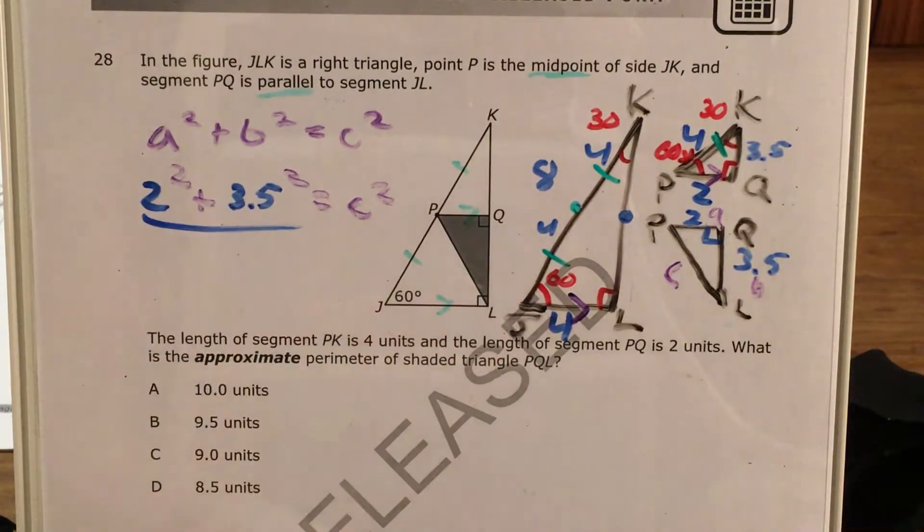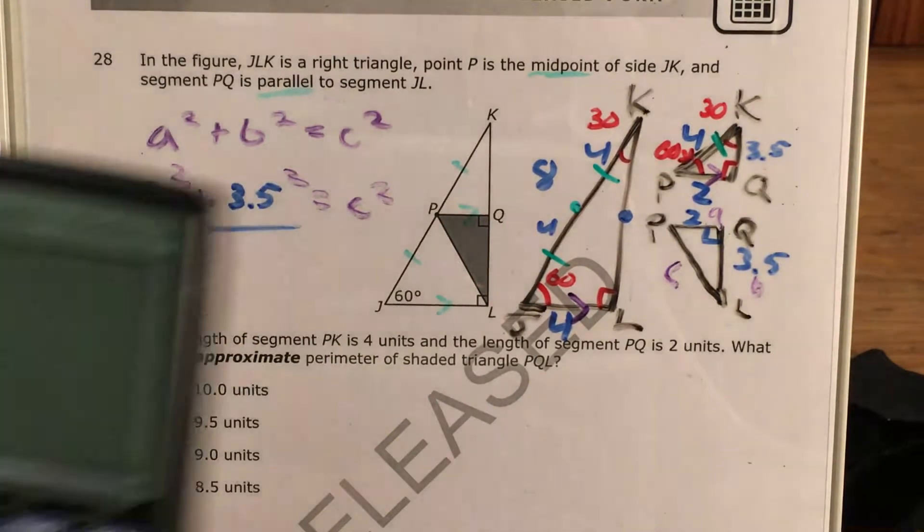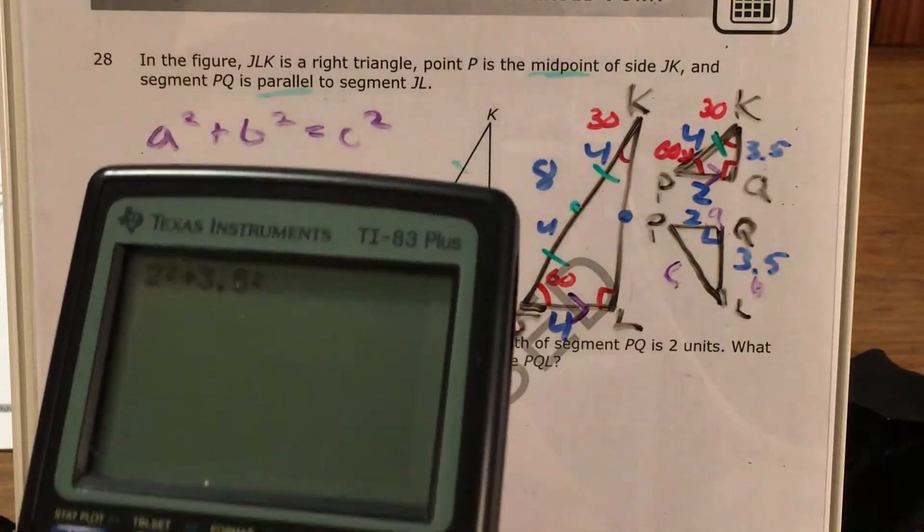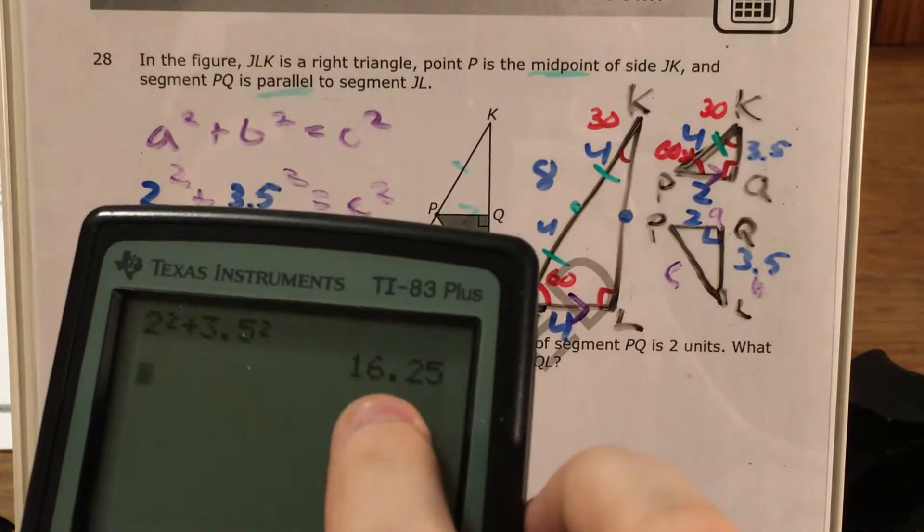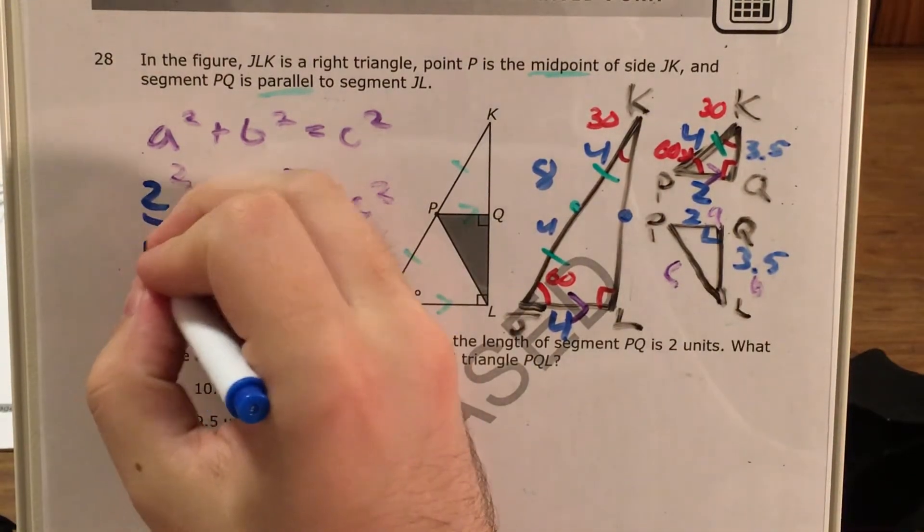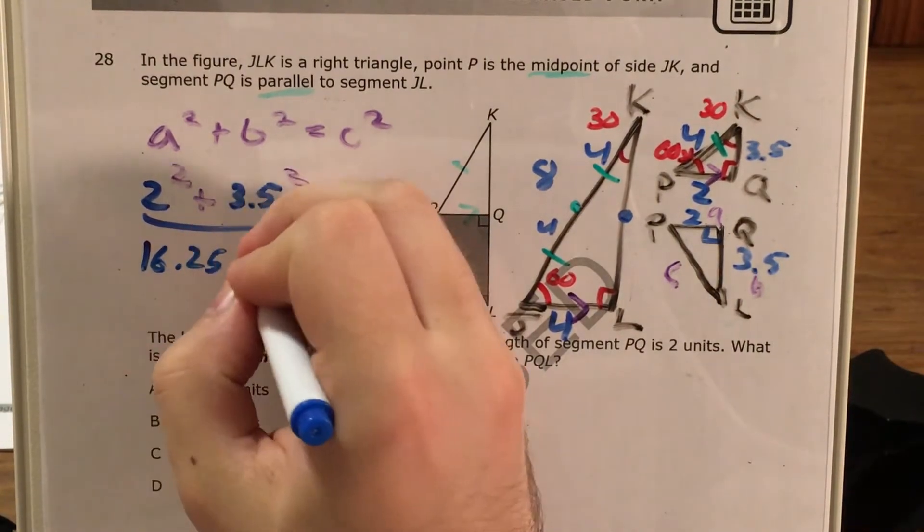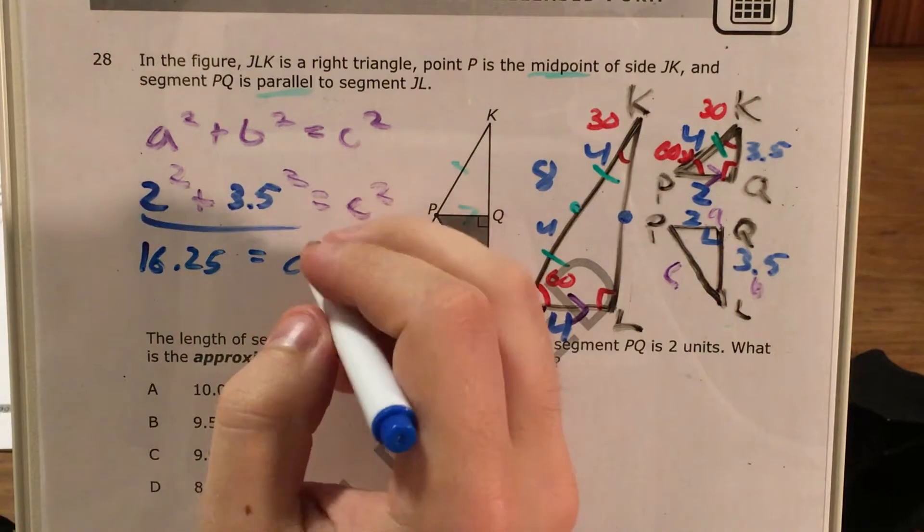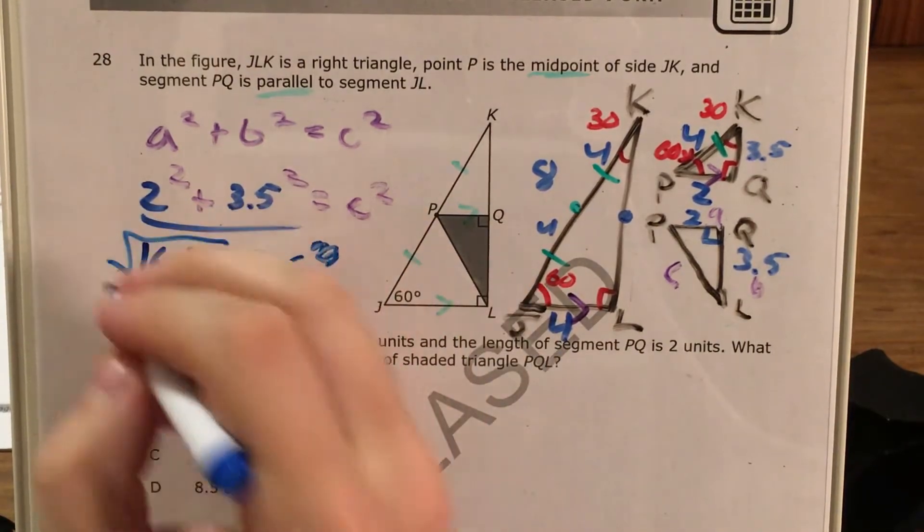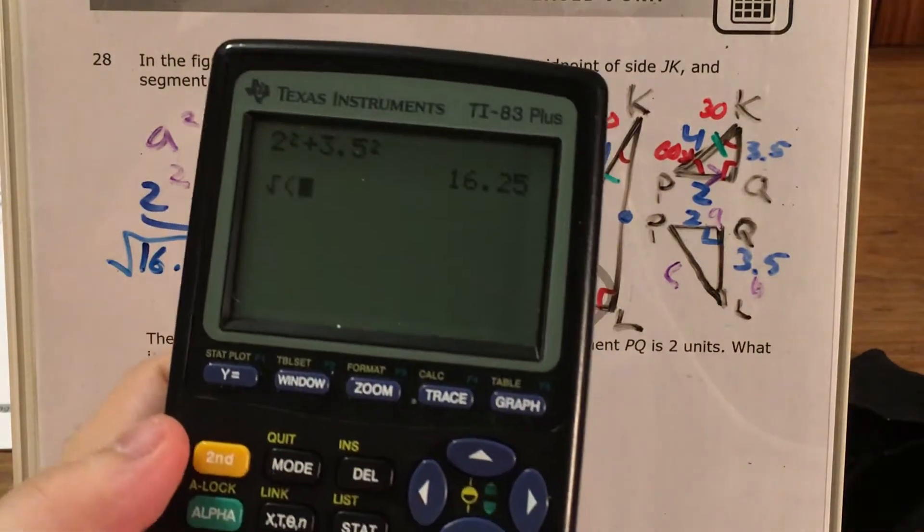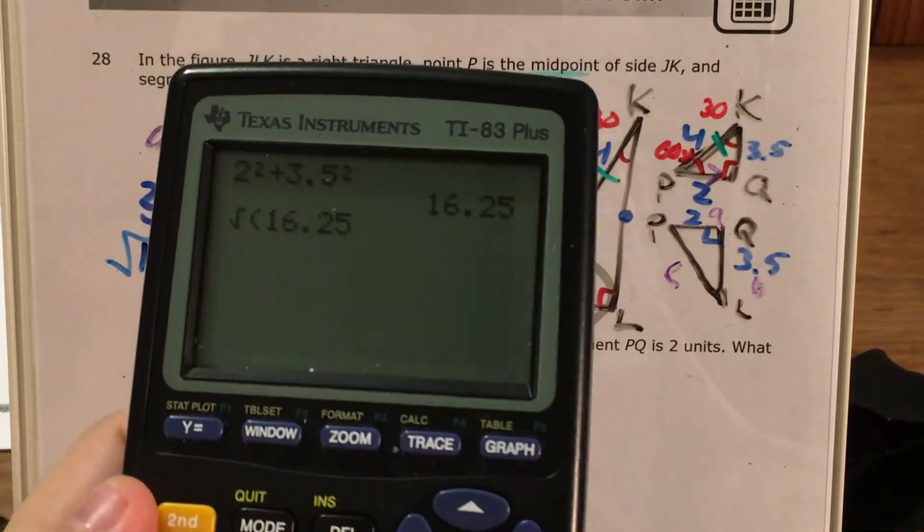And I'll say that 2 squared plus 3.5 squared equals c squared. Now, first thing I need to do is figure out this side. So 2 squared plus 3.5 squared gets me 16.25, 16 and 25 hundredths. And I know that this equals c squared, which means in order to get just c, I need to take the square root of 16.25.